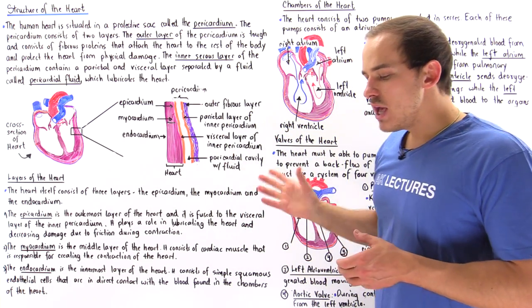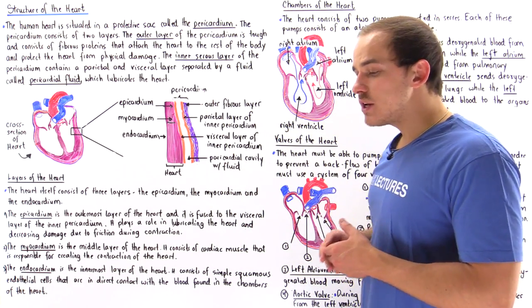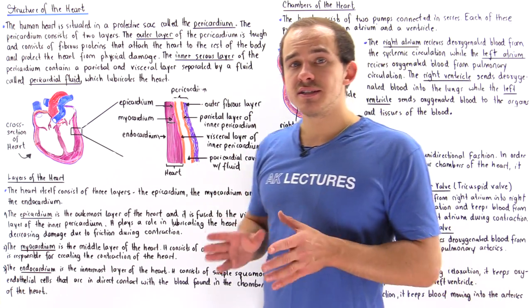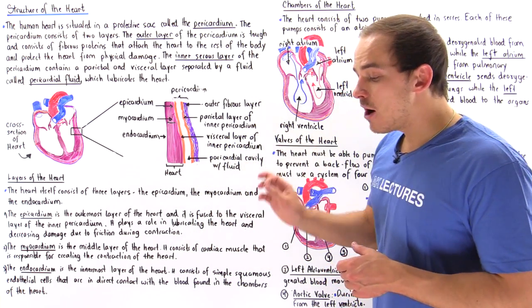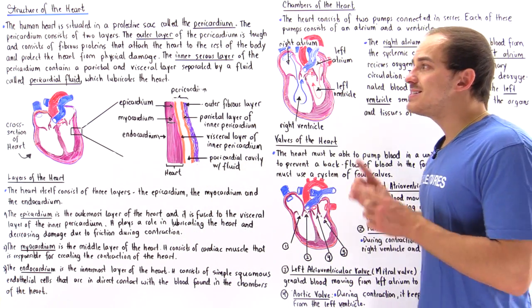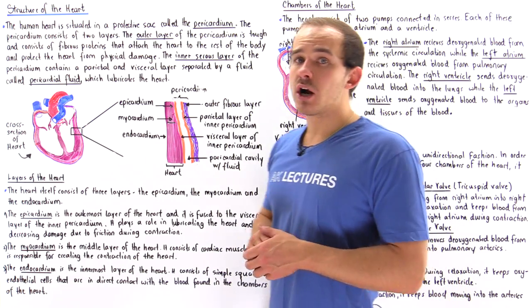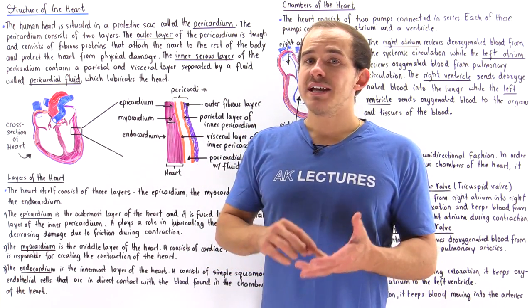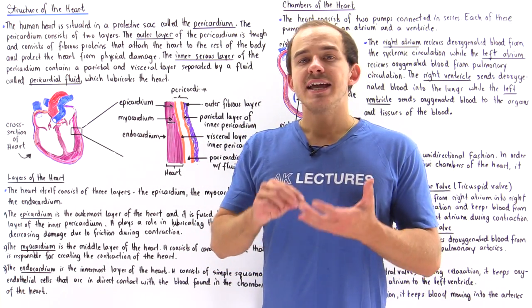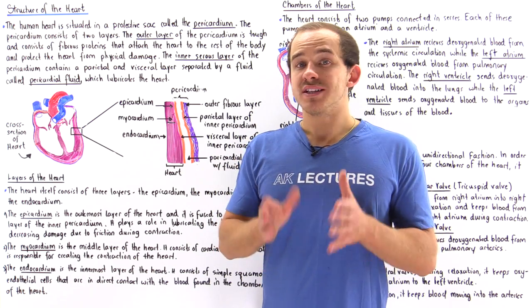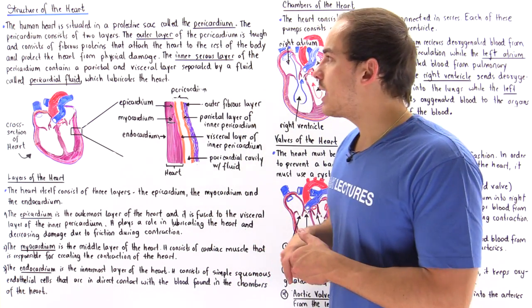The pericardium actually consists of two different layers. The function of the pericardium is not only to protect the heart from physical damage, but also to lubricate the heart and to attach the heart to other parts of our body.